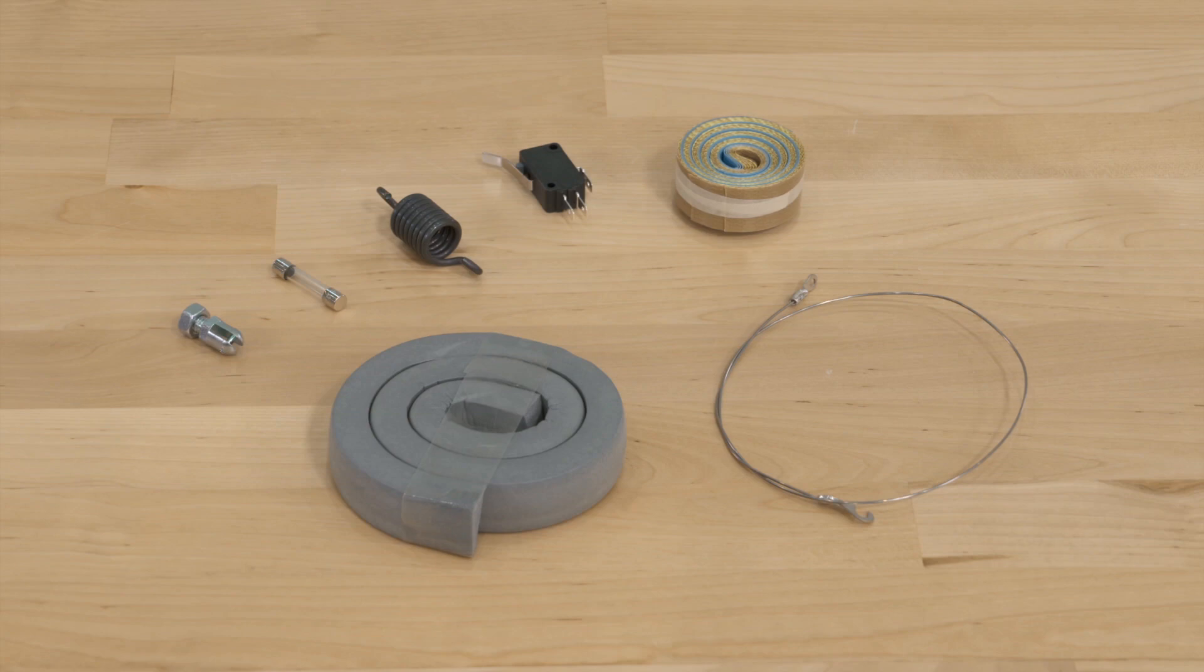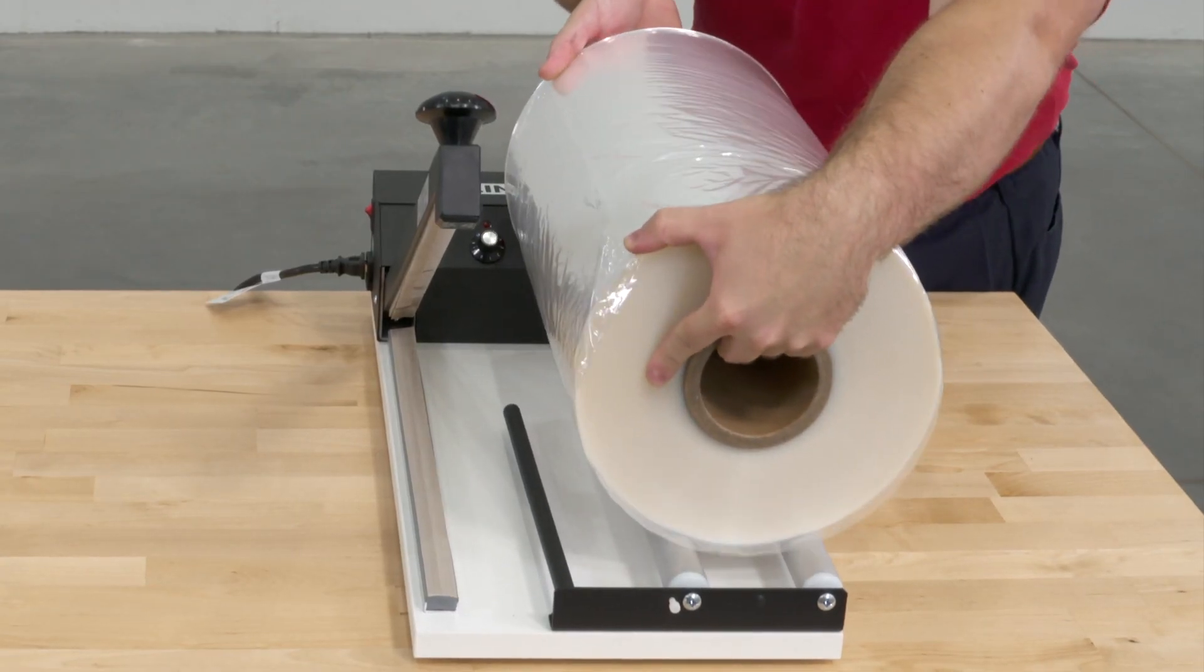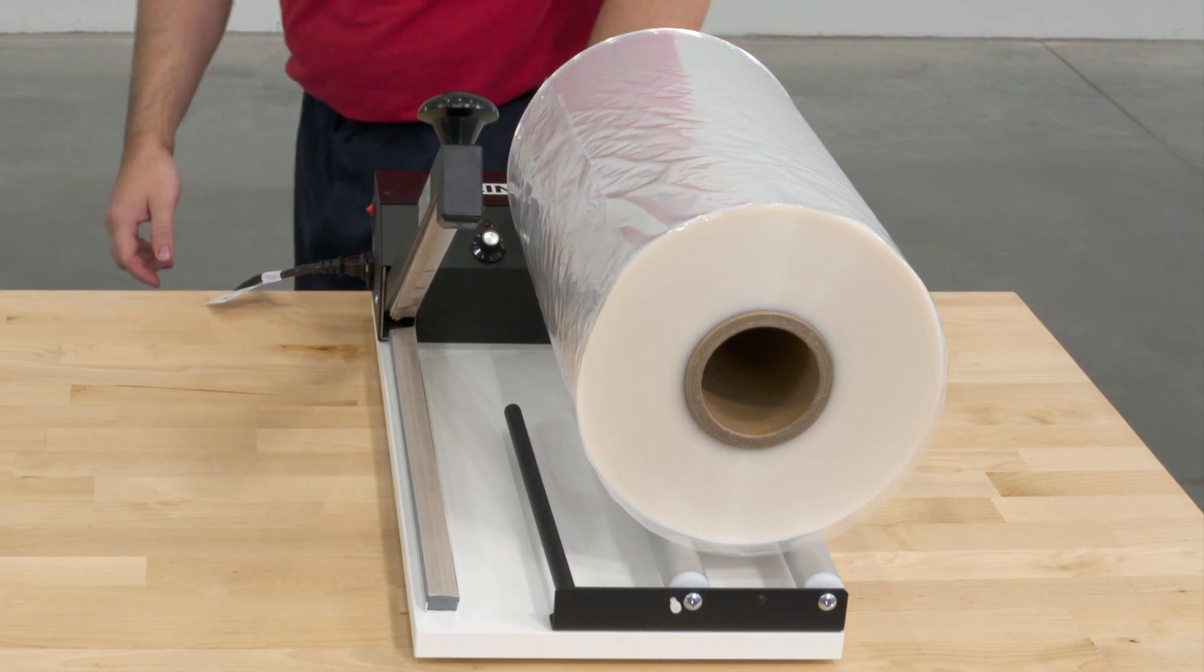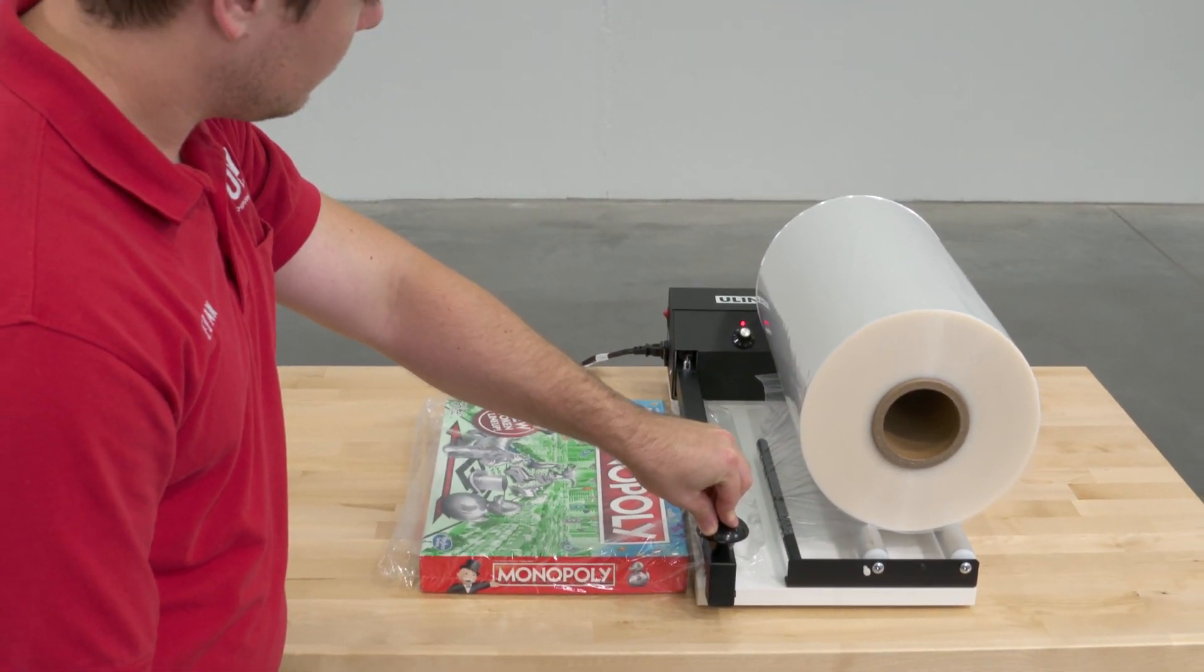Should you choose not to replace the service kit yourself, Uline's repair department can be reached by contacting customer service. Whatever your shrink wrap needs are, you can rely on Uline to have the solution.